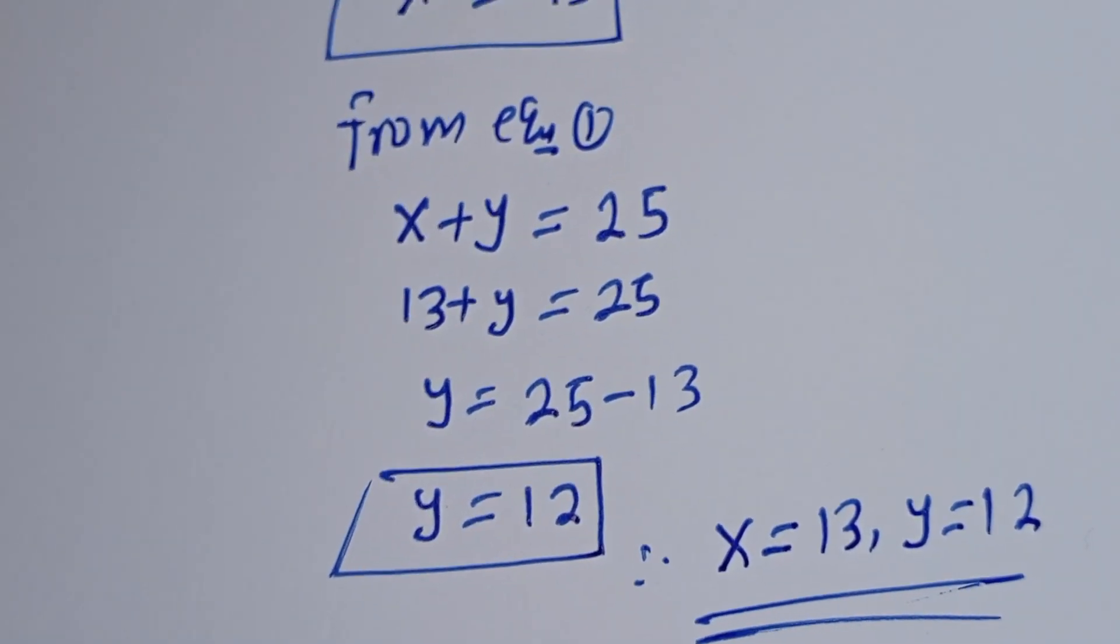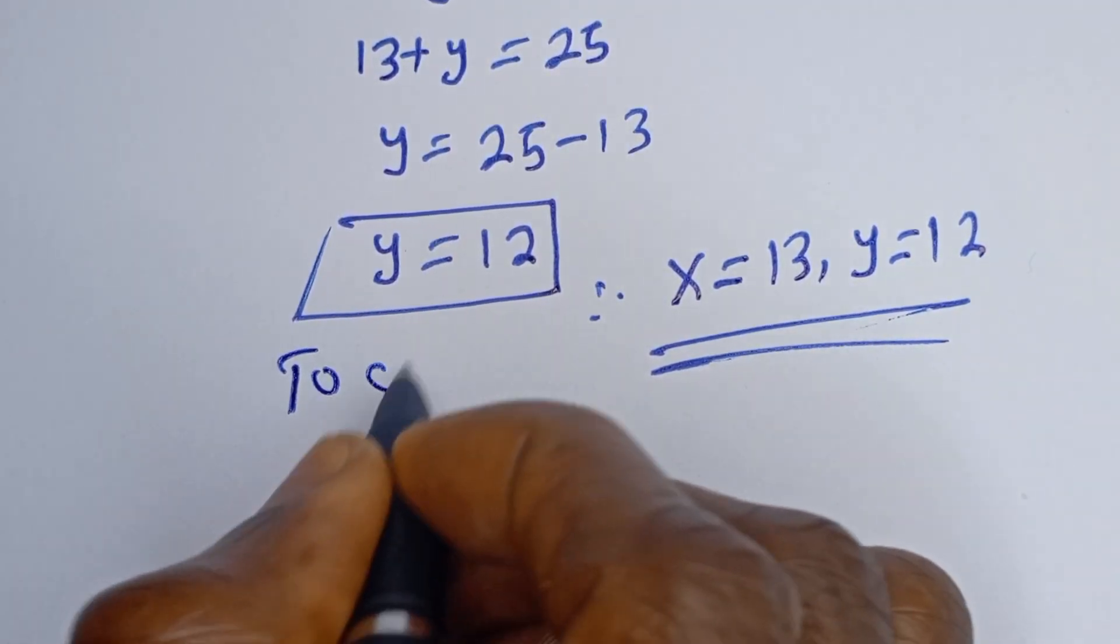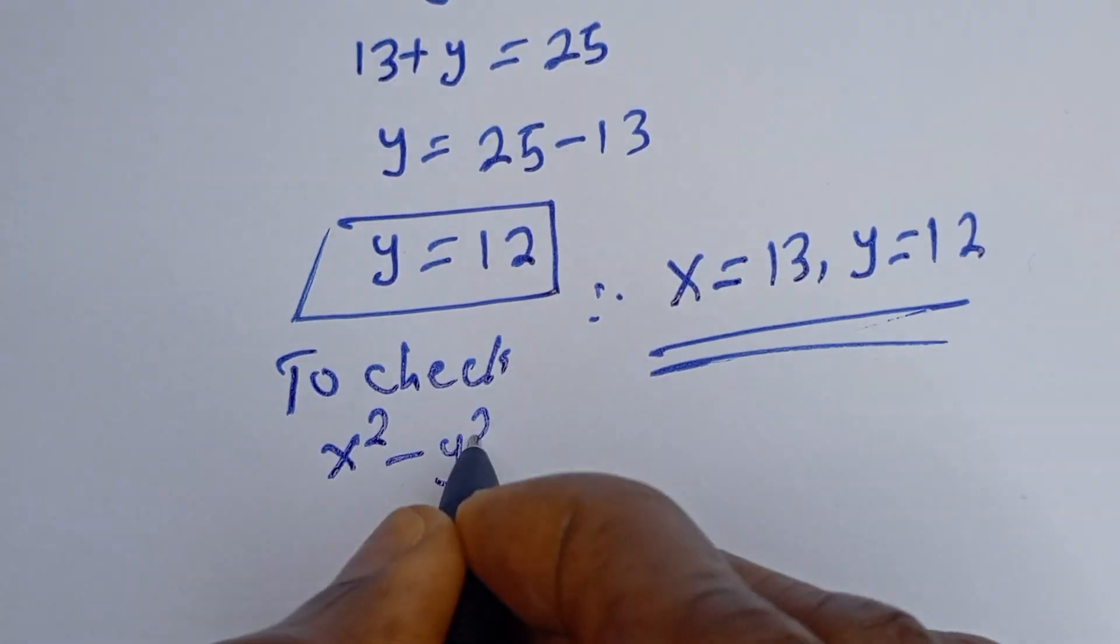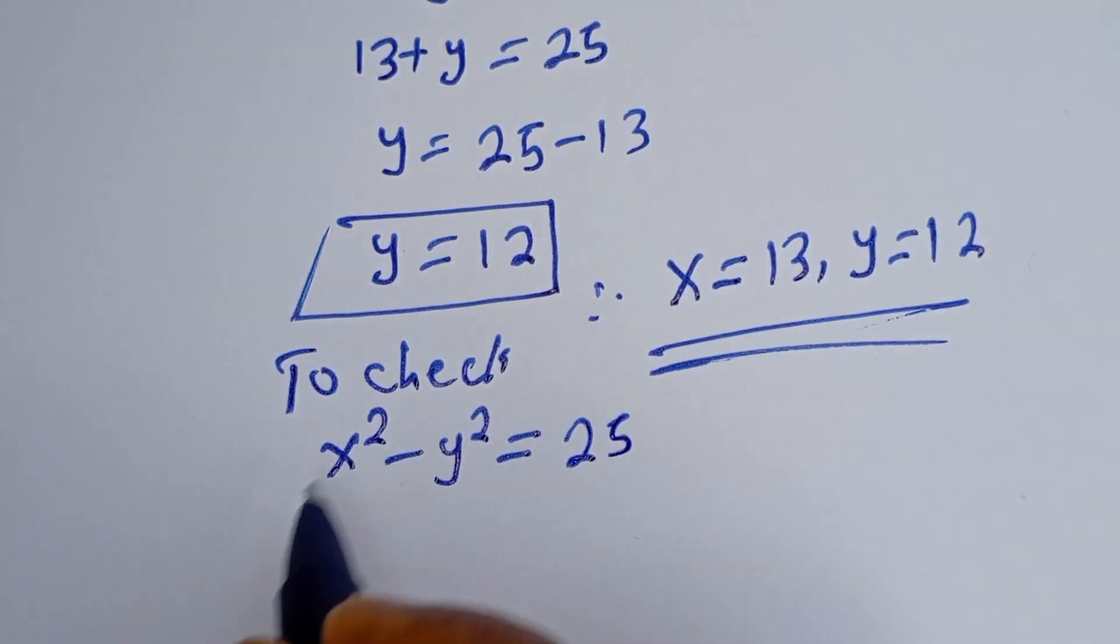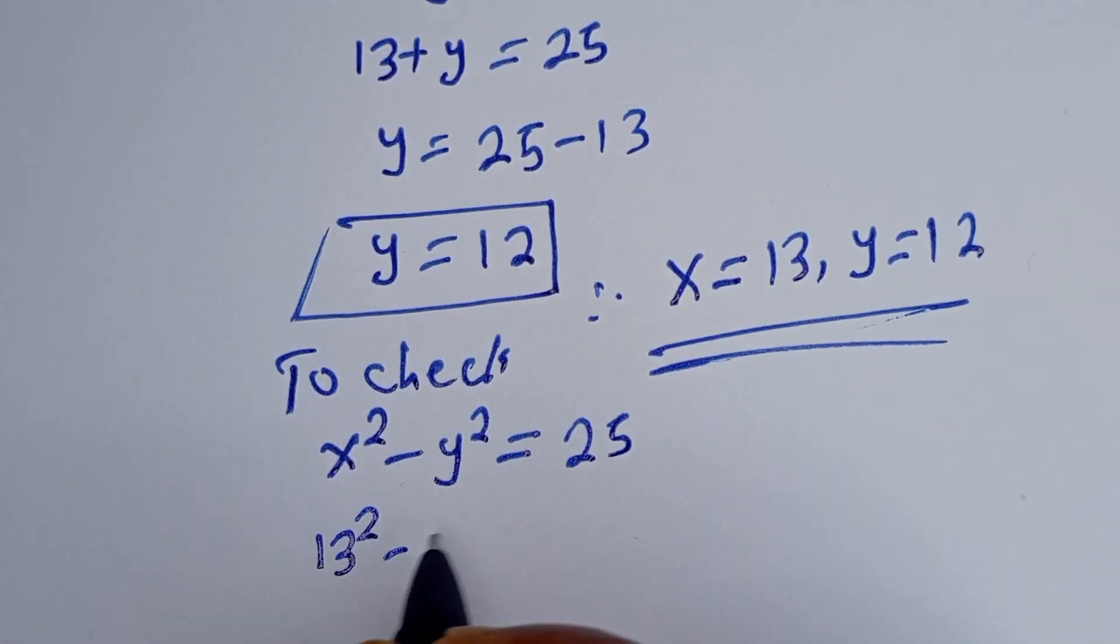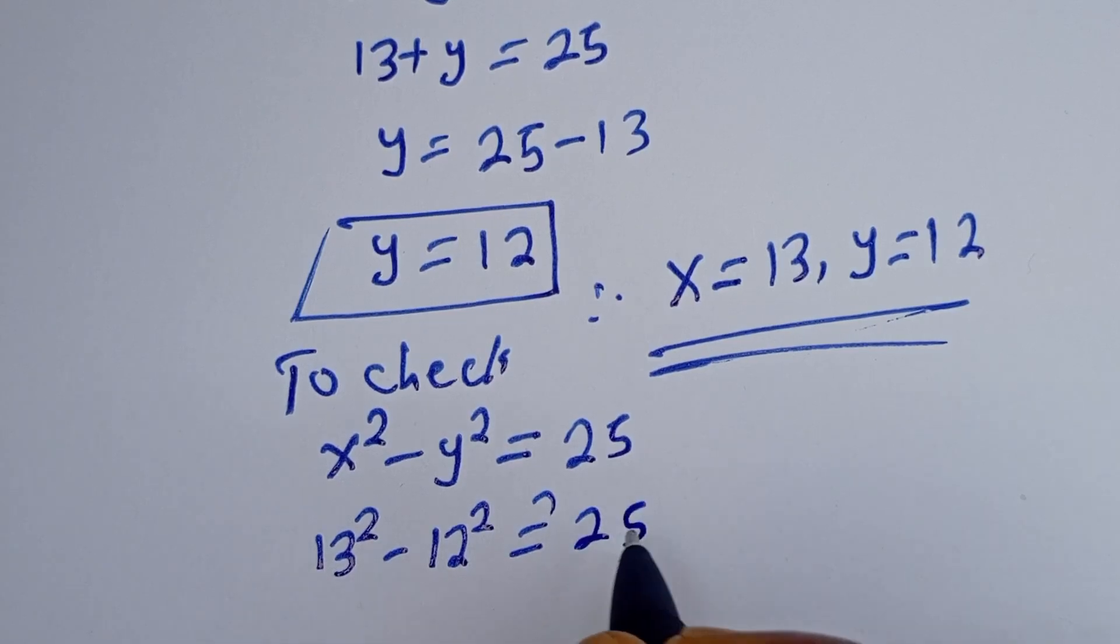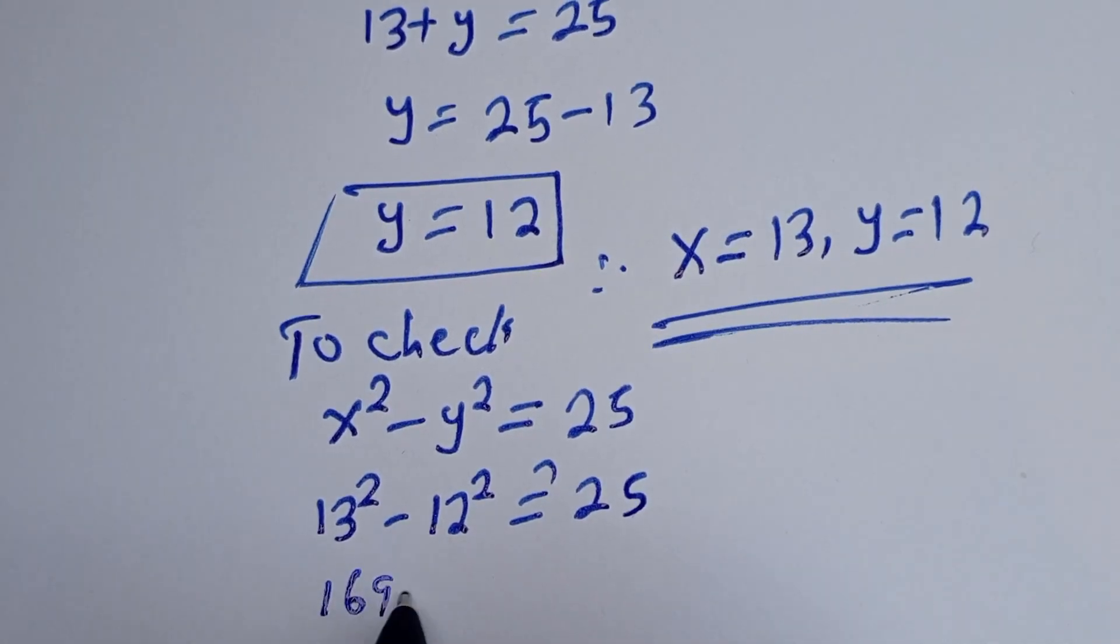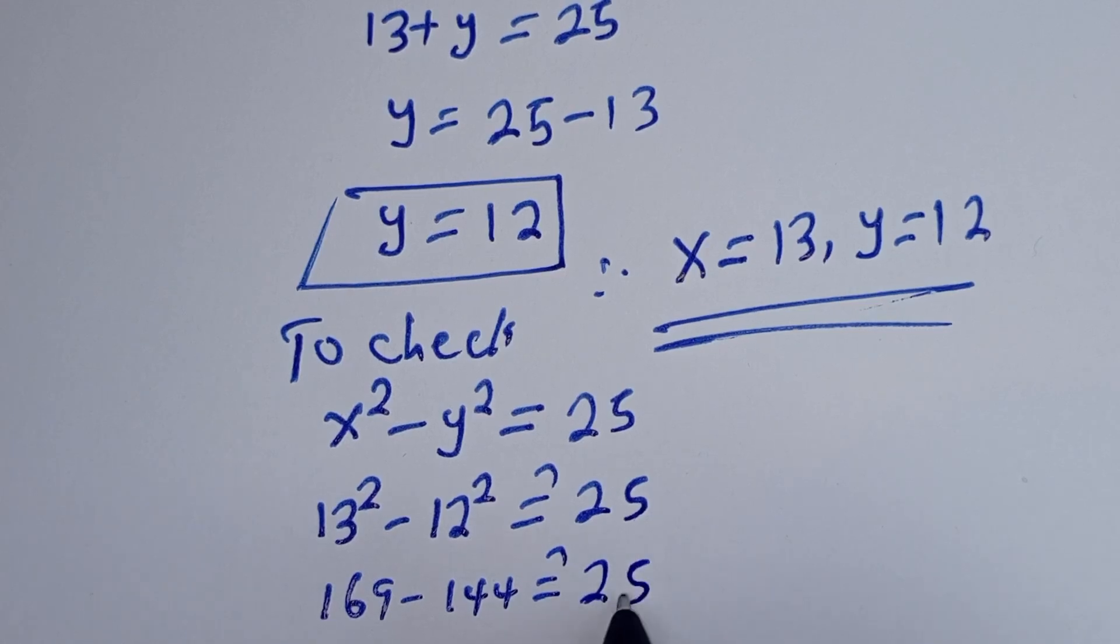Let's check. To check, we have X squared minus Y squared equals 25. Then 13 squared minus 12 squared must equal 25. 169 minus 144 must equal 25.